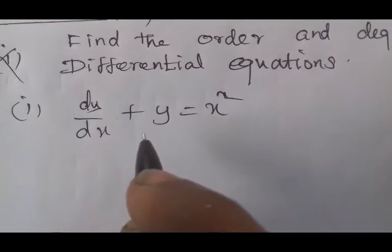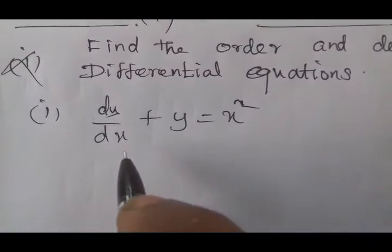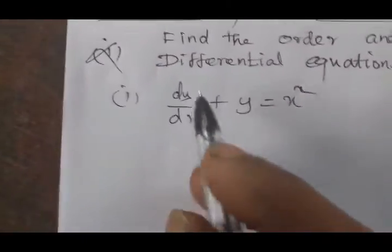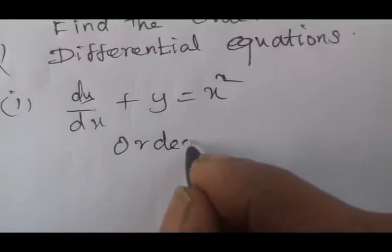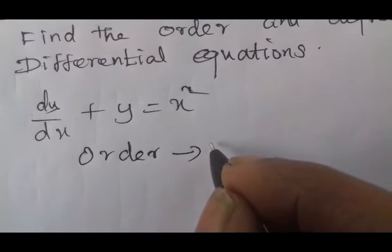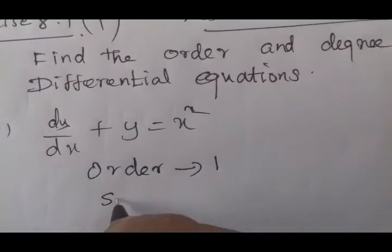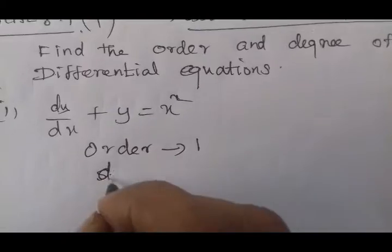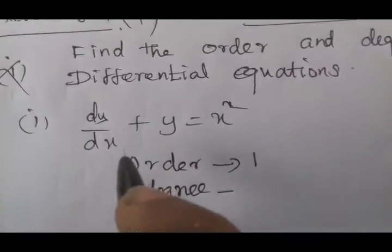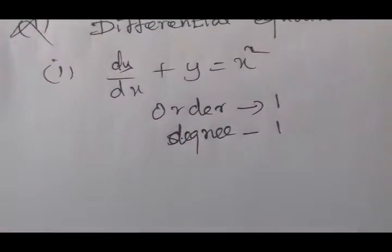What do we find in the second division? The third division is the second division — that means the second division is the degree. dy/dx maximum power is 1, so the answer is: second division, order and degree.